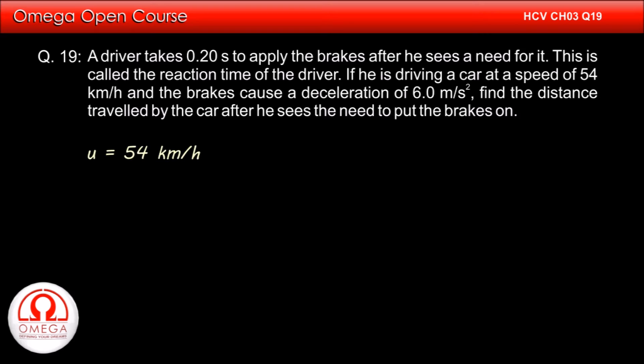The initial speed of the car is 54 km per hour which when converted to m per second turns out to be 15 m per second. Reaction time of driver is 0.2 seconds. Since the car travels with uniform speed during this time, the distance travelled by car during this period is 15 into 0.2 or 3 meters.